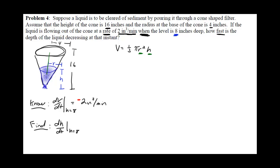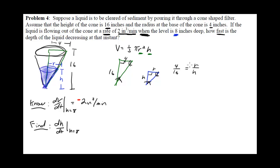If I look at the triangular cross-section of the full cone and the triangular cross-section of the liquid, I can pull out both triangles. Labeling them: the full cone has height 16 and base 4, the liquid cone has height h and radius r. These triangles share an angle, both have a right angle, so the third angles must be congruent — the triangles are similar. Therefore the sides are in proportion: 4/16 = r/h. Cross-multiplying gives 16r = 4h, so r = (1/4)h.